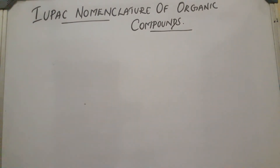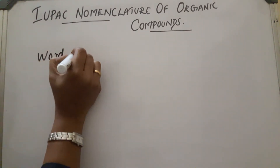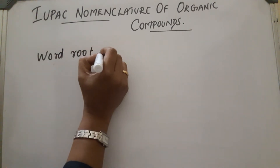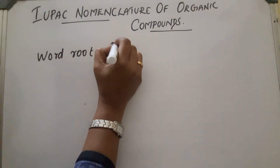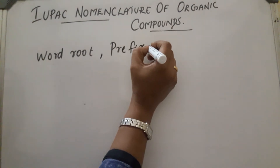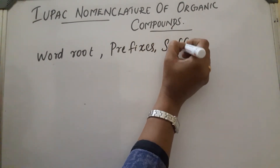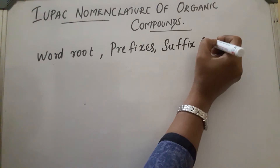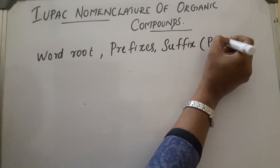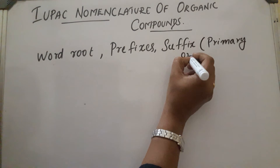In the case of IUPAC naming, it contains three parts. The first part is the word root. The second part is prefixes. The third part is suffix, which will be either primary suffix or secondary suffix.